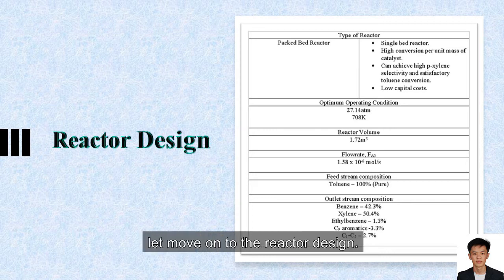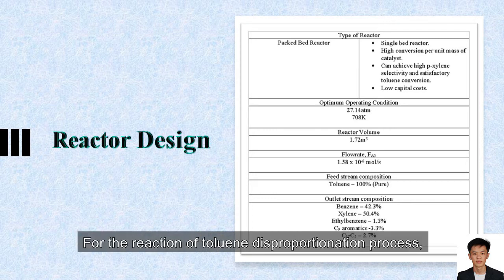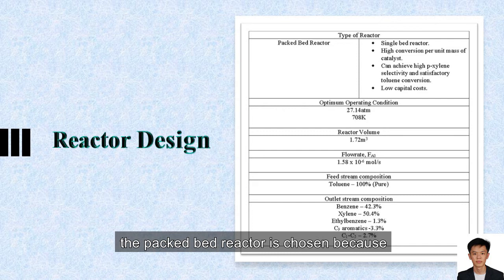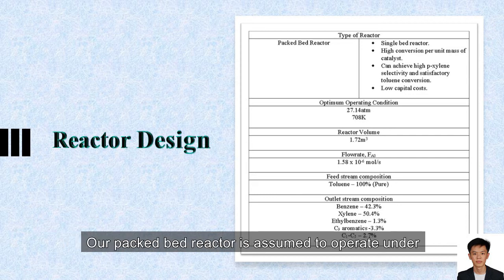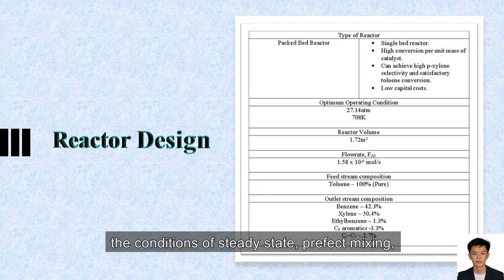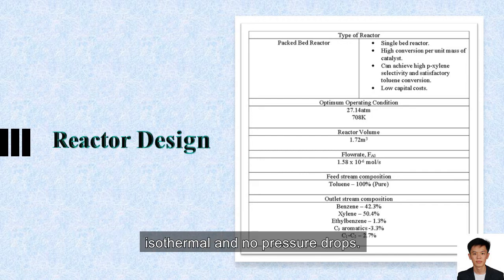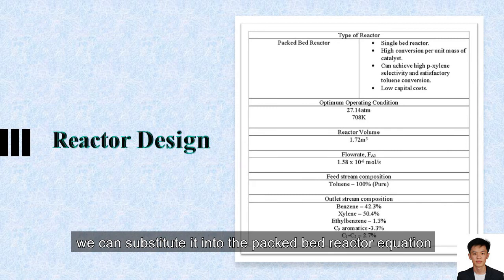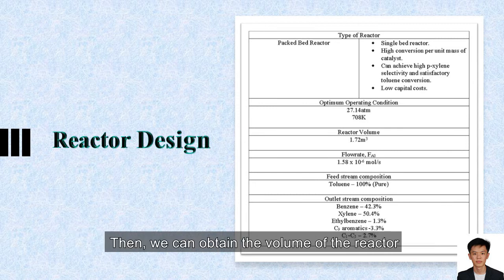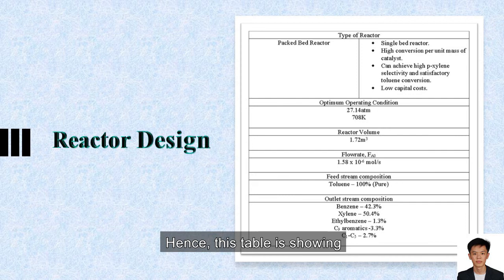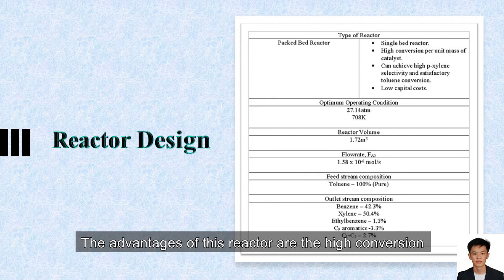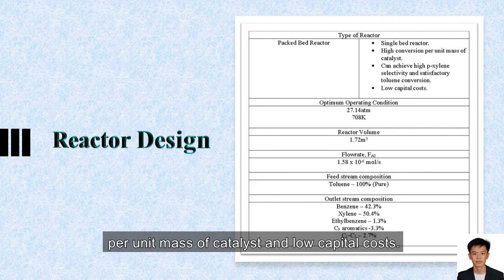Hi, I'm Jason. Let's move on to the reactor design. For the reaction of toluene disproportionation, the packed bed reactor is chosen because this reaction involves a catalyst, which is ZSM-5 zeolite. Our packed bed reactor is assumed to operate under conditions of steady state, isothermal, and no pressure drop. By finding the reaction rate of this reaction, we can substitute it into the packed bed reactor equation and find the weight of the catalyst. Then we can obtain the volume of the reactor from the weight of catalyst divided by the bulk density of catalyst. This table shows our operating conditions. The advantages of this reactor are high conversion per unit mass of catalyst and low capital cost.